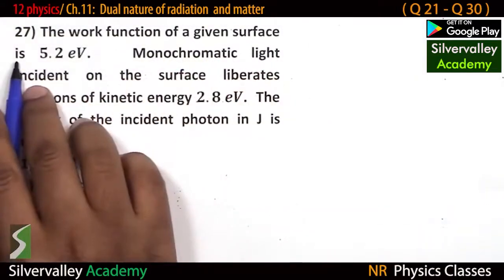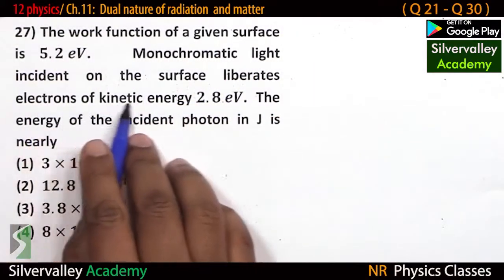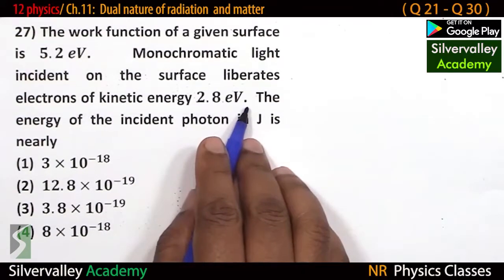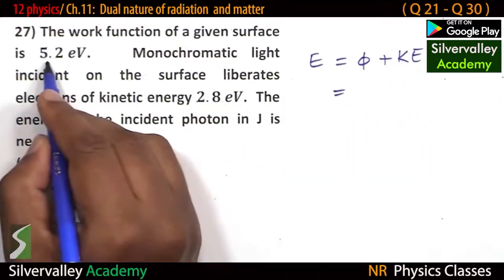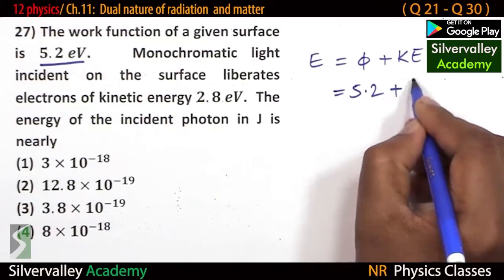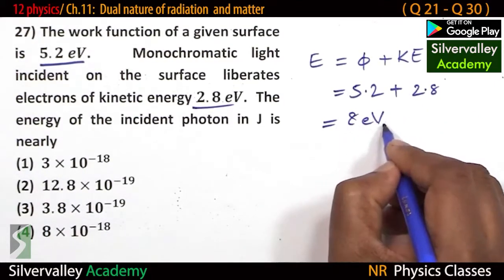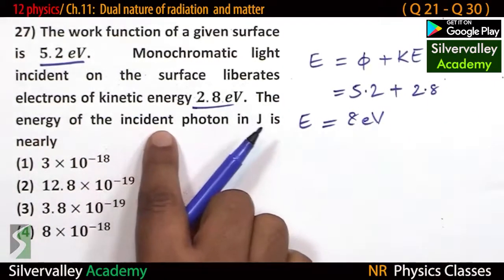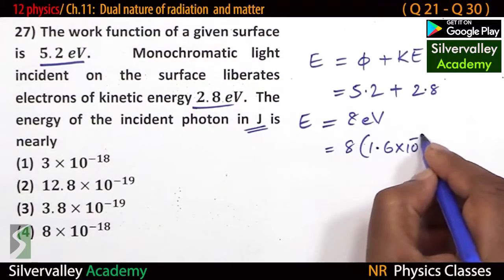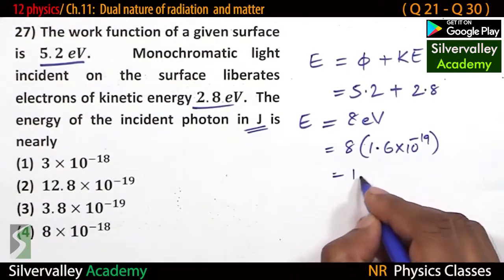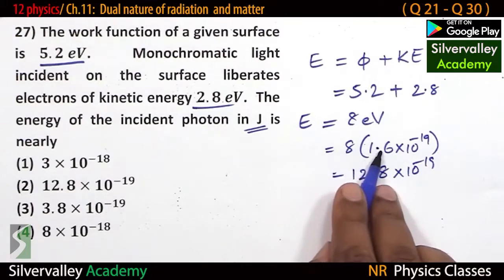The work function of a given surface is 5.2 eV. Monochromatic light incident on the surface liberates electrons of kinetic energy 2.8 eV. So energy equals work function plus kinetic energy: 5.2 plus 2.8 equals 8 eV. Therefore energy of incident radiation is 8 eV, which in joules is 8 times 1.6 times 10 to the power of minus 19, giving 12.8 times 10 to the power of minus 19 joules.